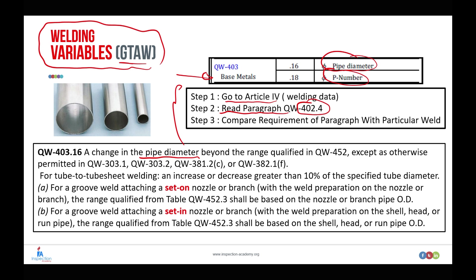Let's go to paragraph QW-403.16. It says that a change in the pipe diameter beyond the range qualified in QW-452, except as otherwise permitted in QW-303.1, QW-303.2, QW-381.2c, or QW-382.1f. Paragraphs QW-303 and QW-381 are for weld overlay and hard facing. If you are using weld overlay or hard facing, refer to those paragraphs; otherwise, refer to paragraph QW-452.